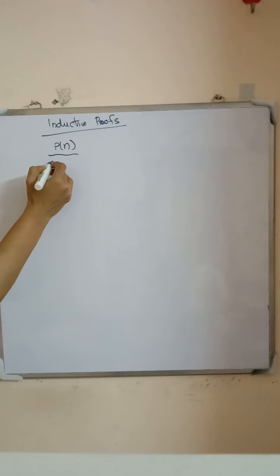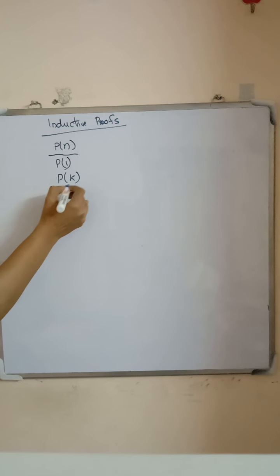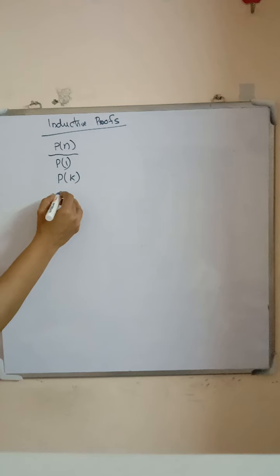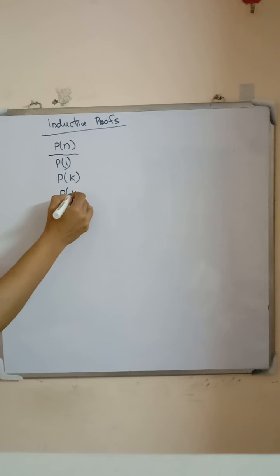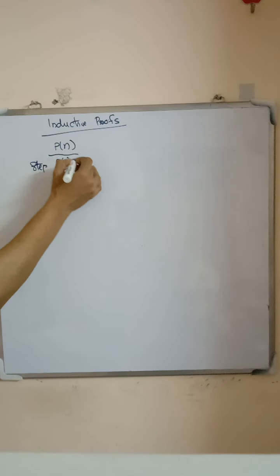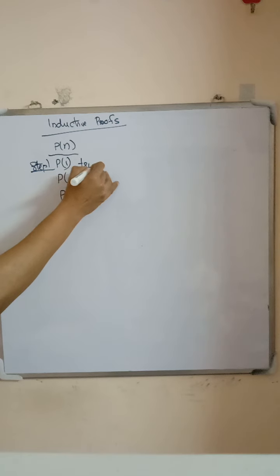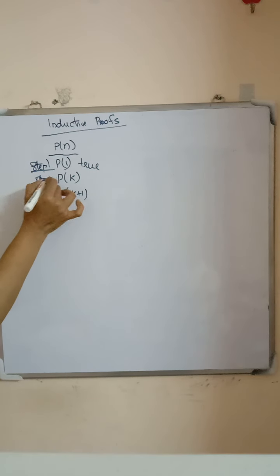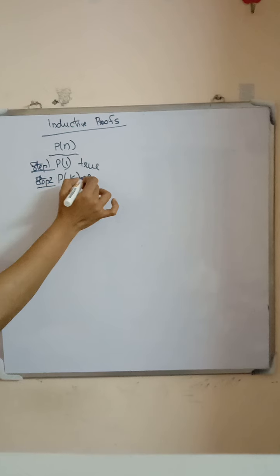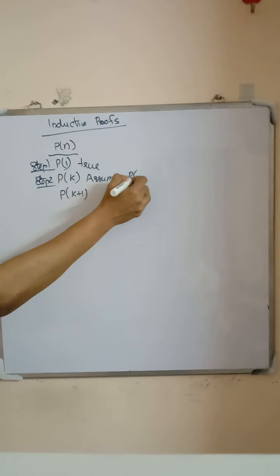Next, we discuss inductive proofs. By the method of induction, we prove the statement P(N). For proving P(N), first we prove the result is true for N = 1. Then we assume that the result is true for N = K. Then we prove that the result is true for K + 1. In step one, we prove that P(1) is true.